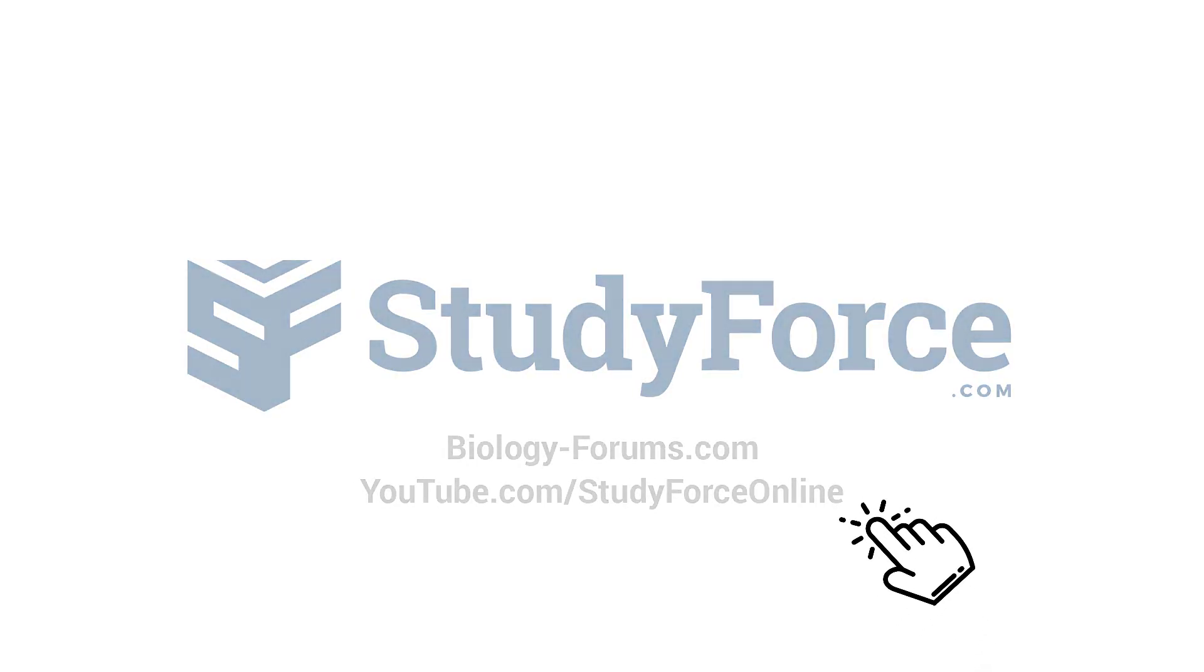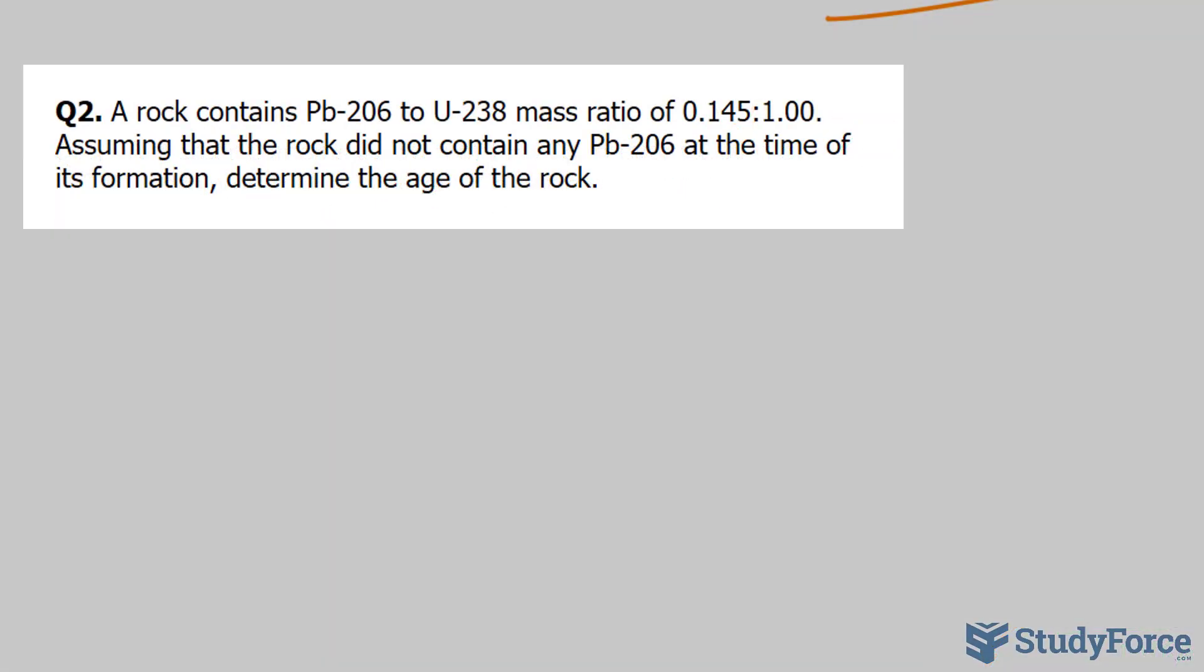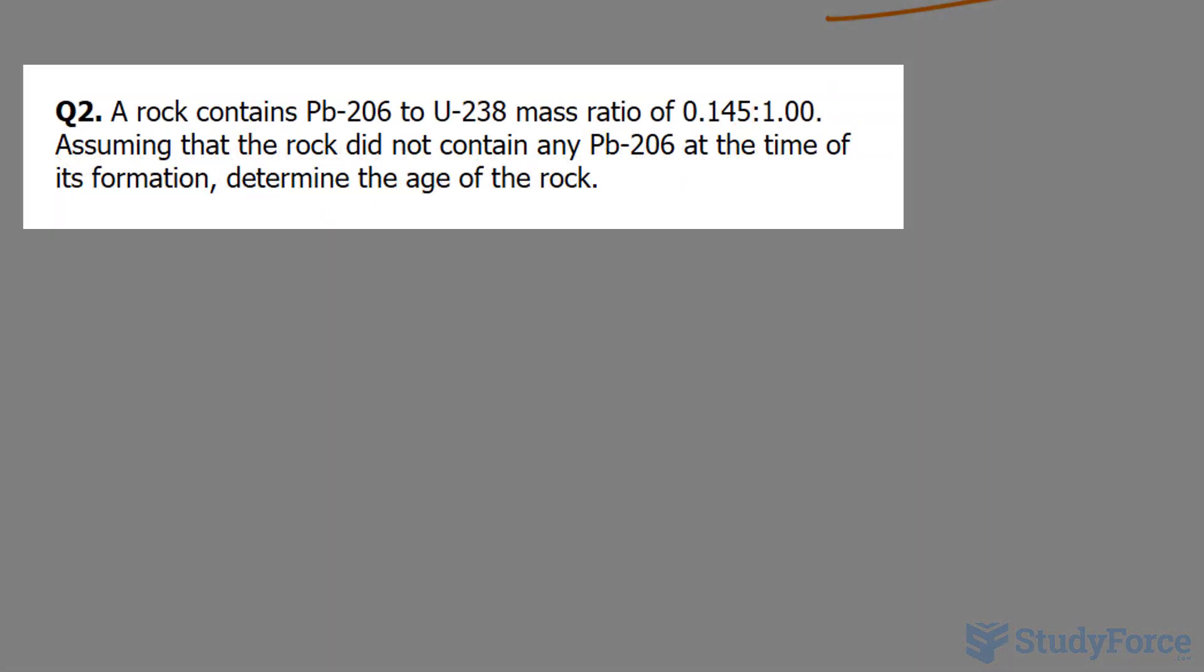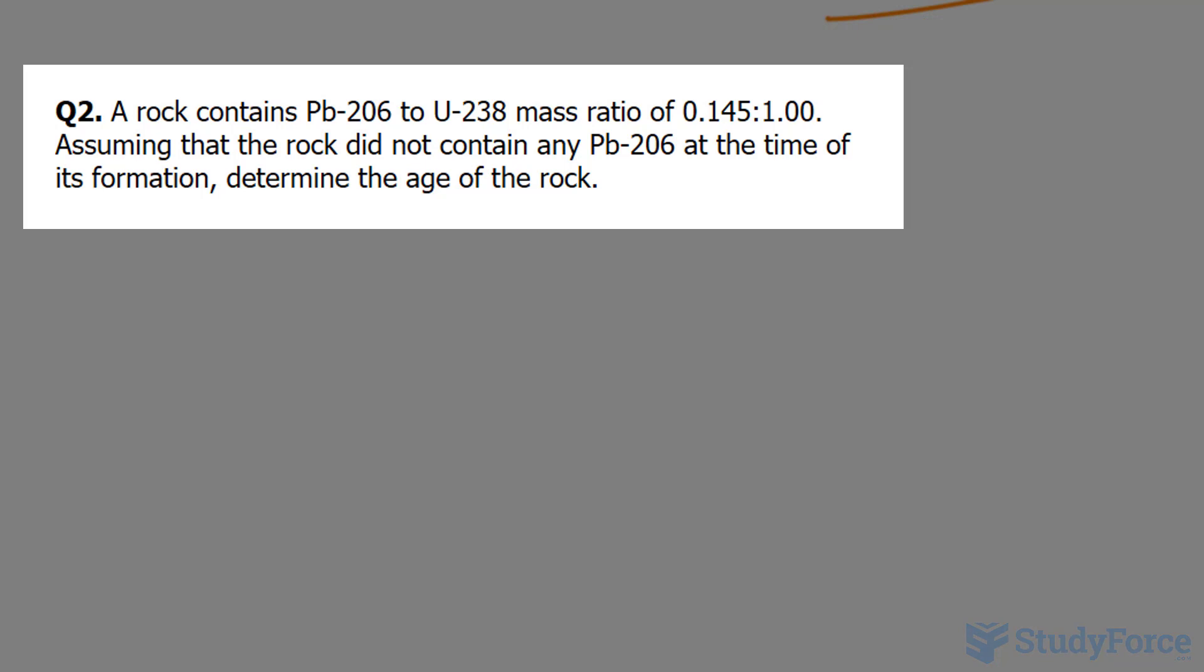Welcome back to question 2 of this series where we use uranium-lead dating to estimate the age of a rock. We ended off with the following question which reads: A rock contains Pb-206 to U-238 mass ratio of 0.145 to 1.00. Assuming that the rock did not contain any lead at the time of its formation, determine the age of the rock.